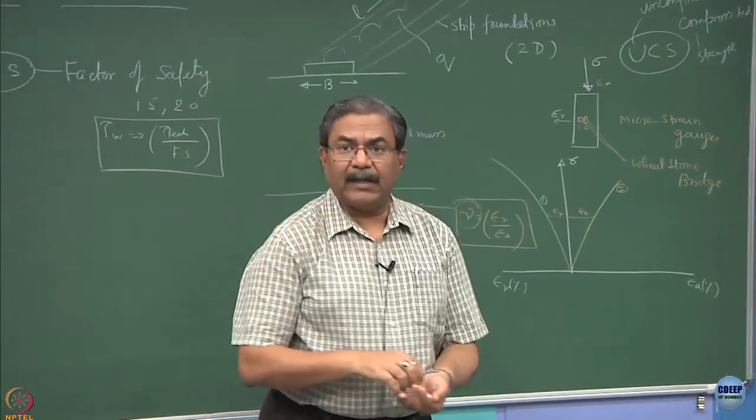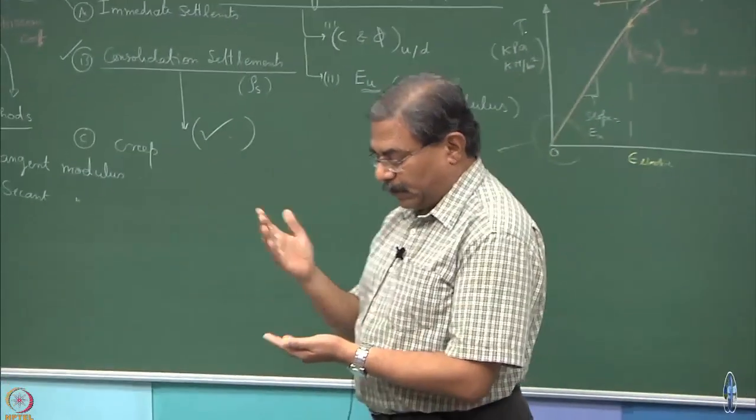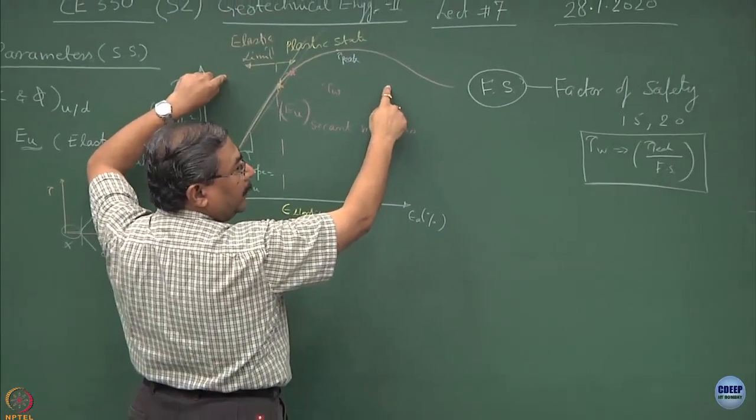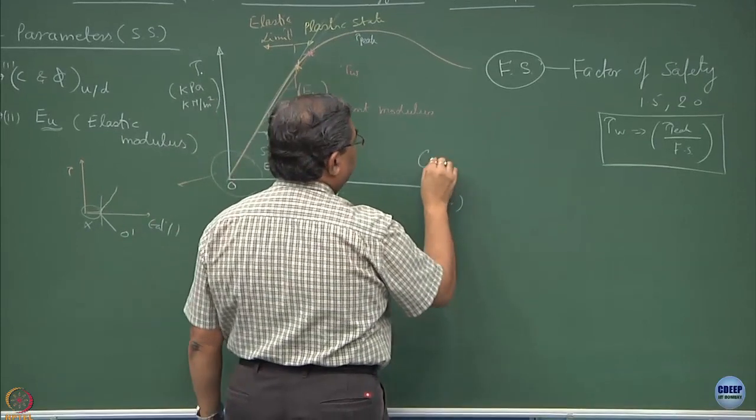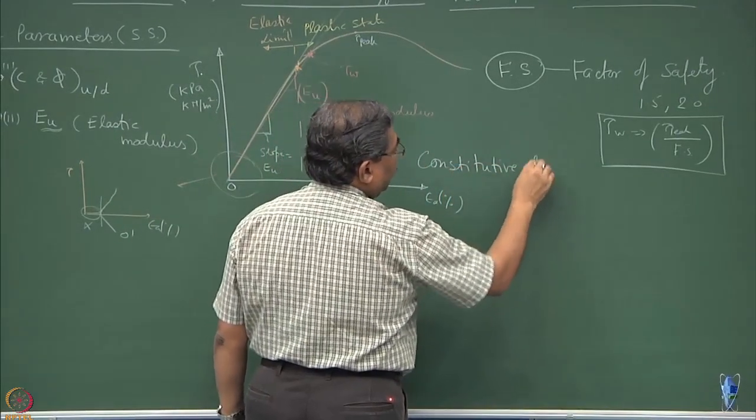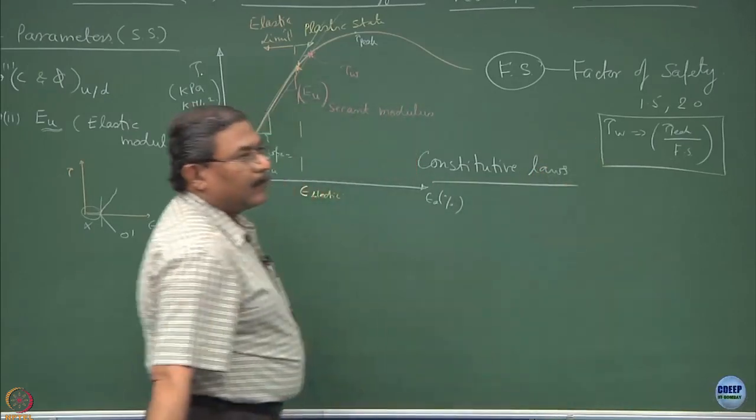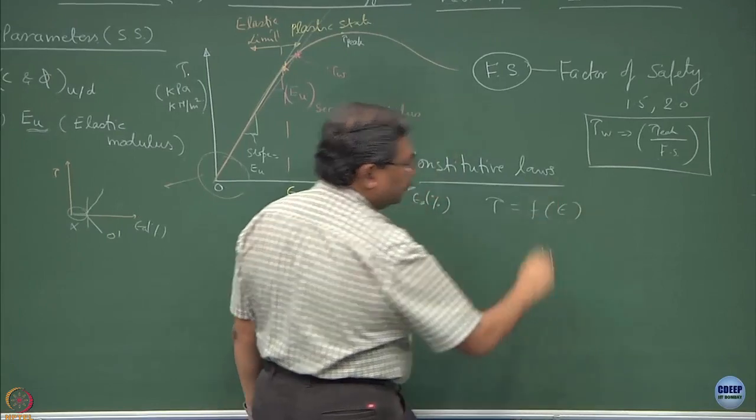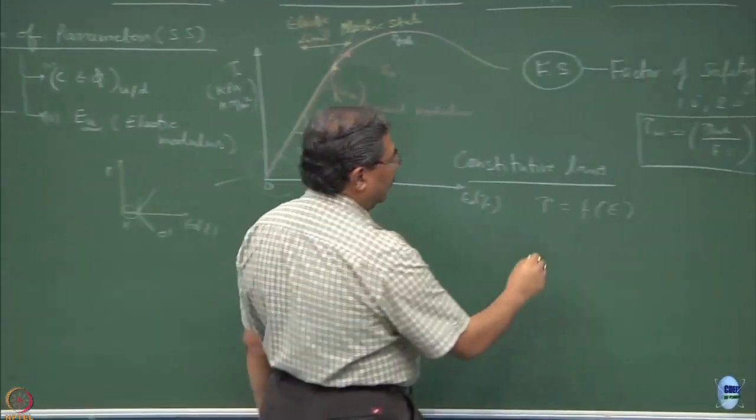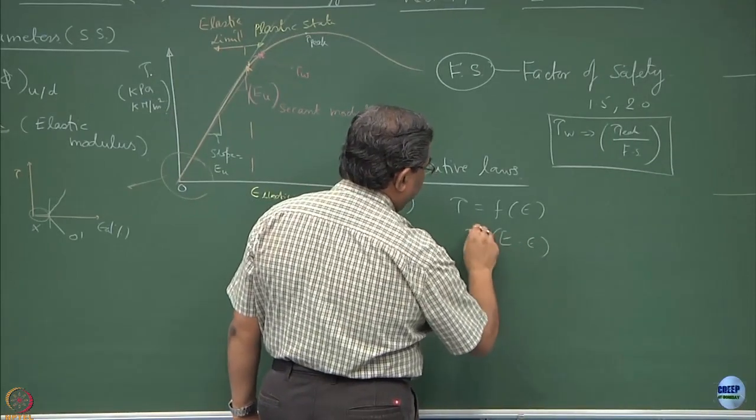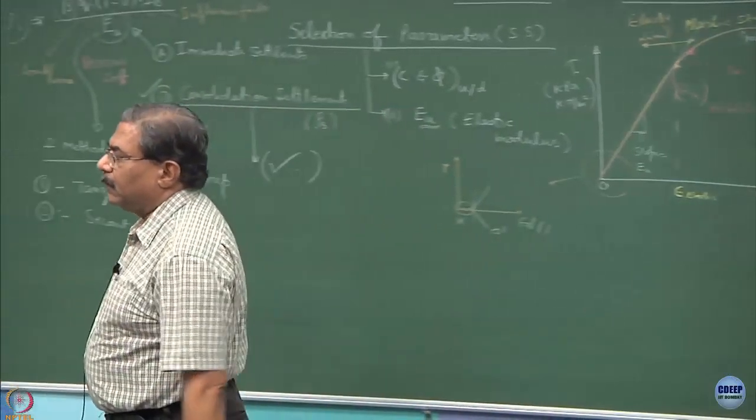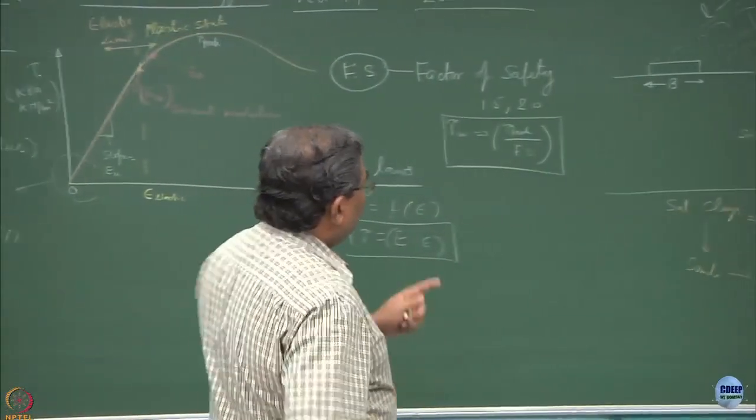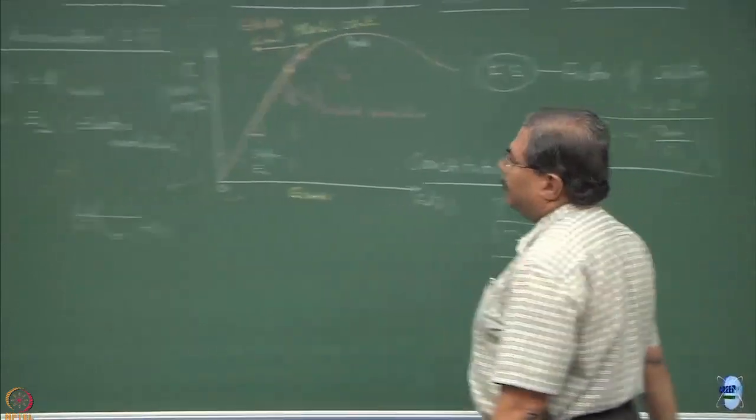Those of you who might be doing finite element methods for your BTP or higher studies will realize that this type of relationship is quite interesting to define what is known as constitutive laws. One of them is tau as a function of epsilon. Function is nothing but elastic modulus multiplied by epsilon. This type of relationship has to be fed into the computer to obtain the load deformation characteristics and then do the stress-strain analysis.